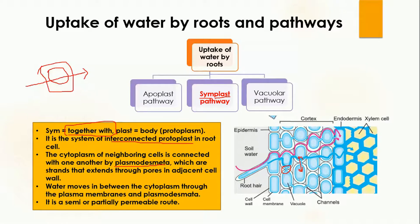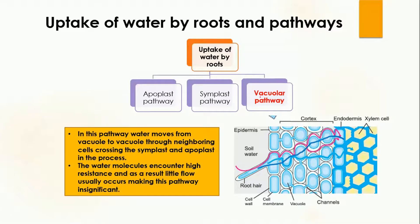Water moves between the cytoplasm through the plasma membrane and plasmodesmata. The plasma membrane is semi-permeable, meaning it allows some substances to pass through but not others. The last pathway is the vacuolar pathway.